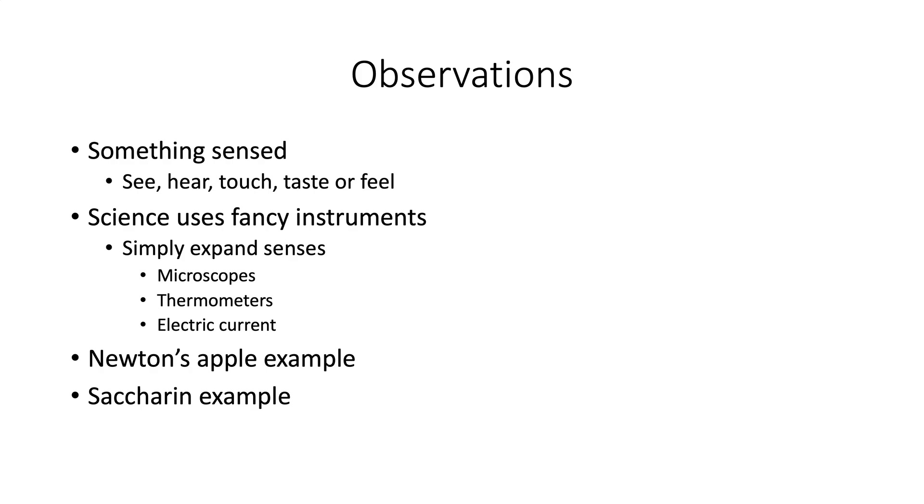An observation is something measurable. Typically, it's anything you can see, hear, touch, taste, or feel. Now, if you were to walk into a modern science lab, you see a lot of computers and little wires and probes and sticks sticking into flasks and stuff. All those things do is expand the senses. Examples are microscopes or a telescope. You can hold something in your hand and say this is hotter than this, but you can't say the temperature, so we have thermometers. You can measure very small amounts of electric current. They're just expanding our senses.